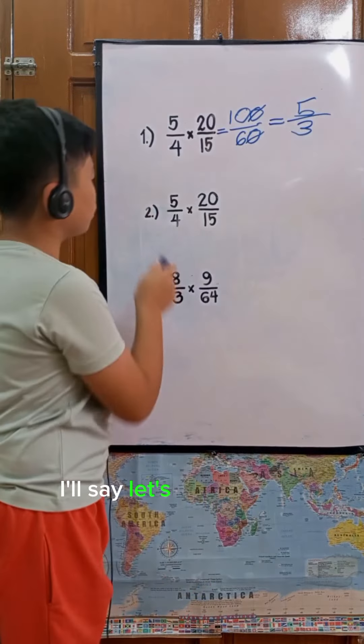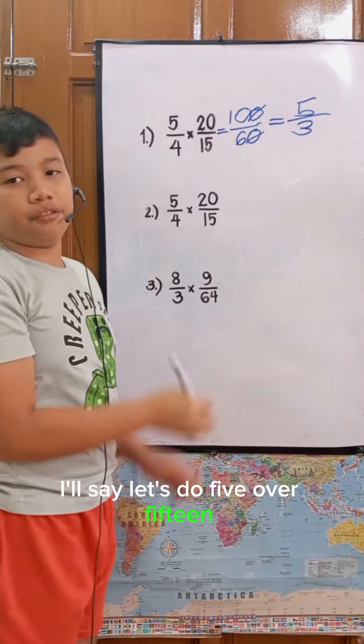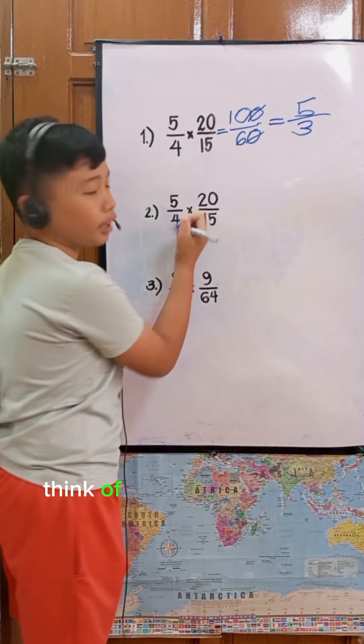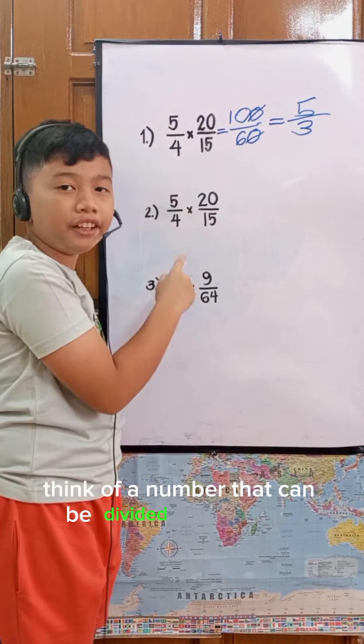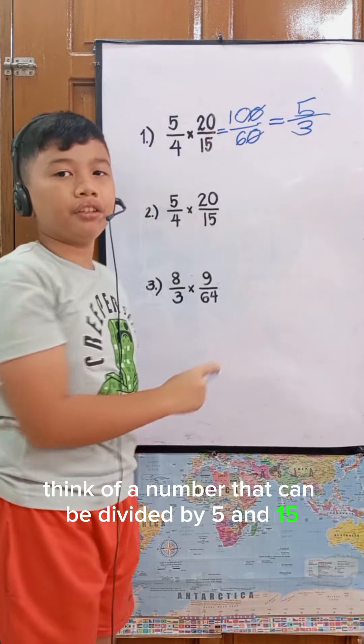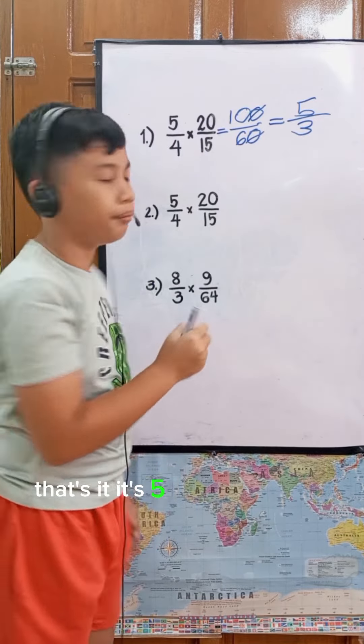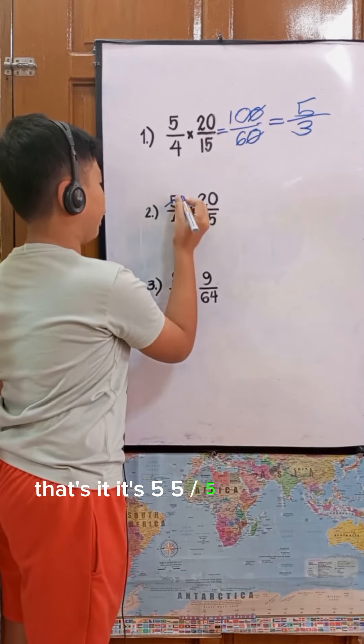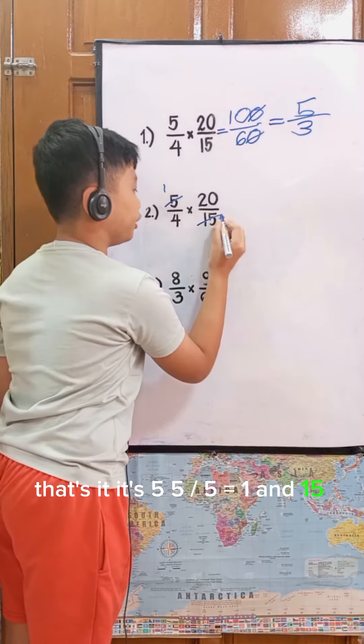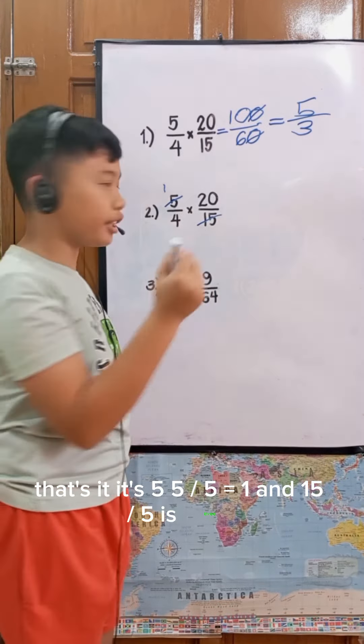I'll say let's do 5 over 15. Think of a number that can be divided by 5 and 15. That's it, it's 5. So 5 divided by 5 equals 1, and 15 divided by 5 is 3.